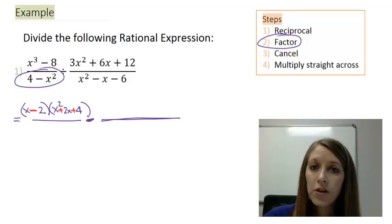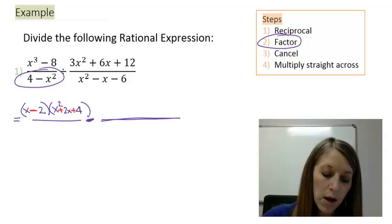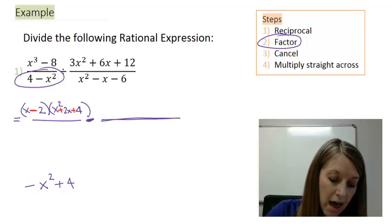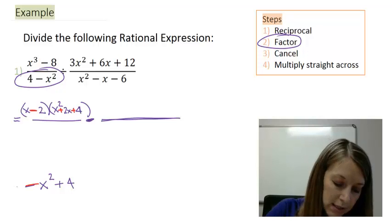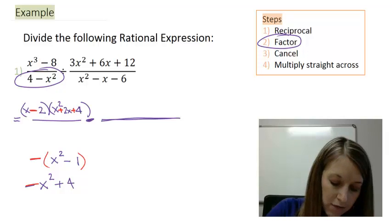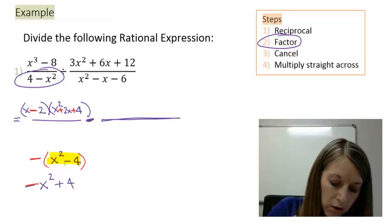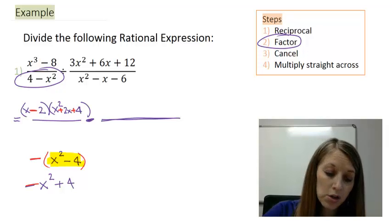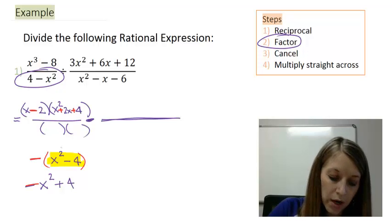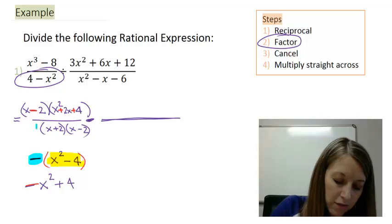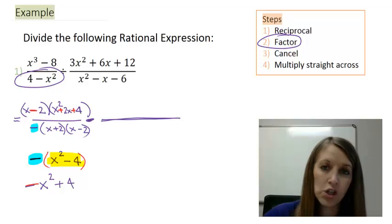Now the bottom: 4 minus x squared. The first thing I notice is it's not in typical order, so I'll rearrange it — the negative x squared moves to the front and the positive 4 moves to the back. Now I have a negative in front, so I'll factor out that negative, leaving a positive x squared minus 4. That switches both signs in the binomial. I have two terms that are both perfect squares, so I can factor as a difference of squares: x plus 2 and x minus 2. Don't forget to copy that negative from step to step — many students forget to do that.